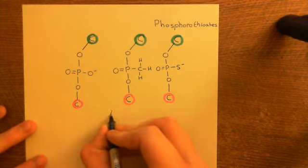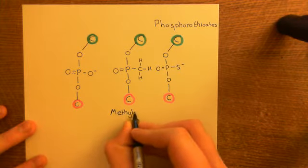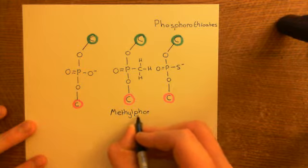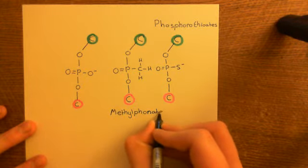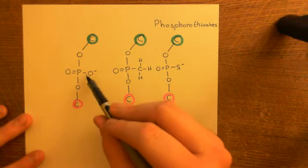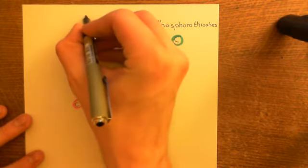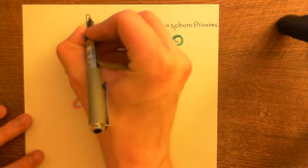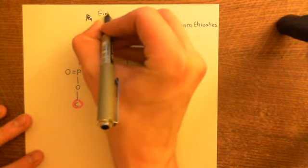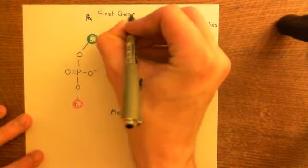These two types — the methylphosphonates and the phosphorothioates — which were both modifications of single-stranded DNA targeting the group attached to the phosphorus atom, are what are known as first-generation anti-sense oligonucleotides.